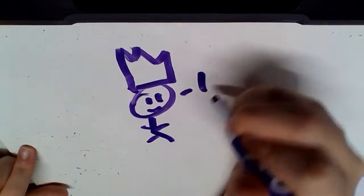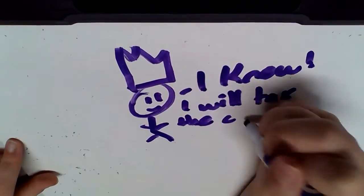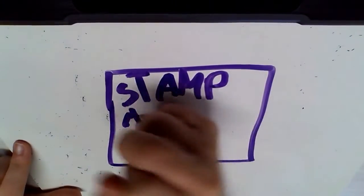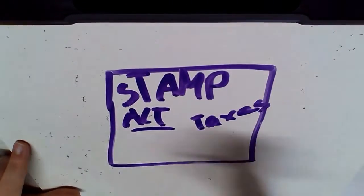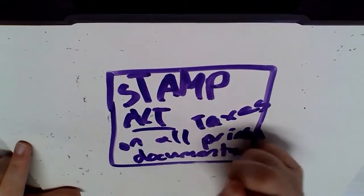So then the king was like, I know how I can get us out of this debt. I will tax the colonists. So he taxed the colonists with the Stamp Act, which was taxes on all printed documents and products.